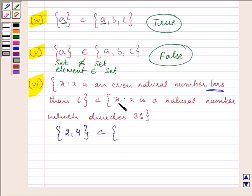That will be 2 and 4, because it is given to us that it should be less than 6. Therefore, we are not including 6 in it. Is this a subset of {x : x is a natural number which divides 36}? So the natural numbers which divide 36 are 1, 2, 3, 4, 9, 12, 18, and 36.